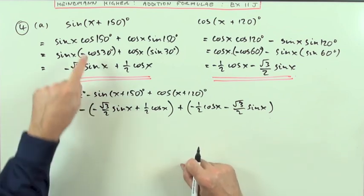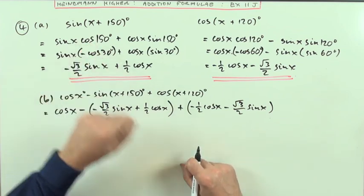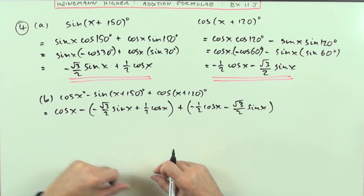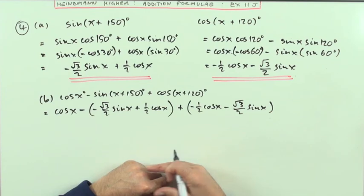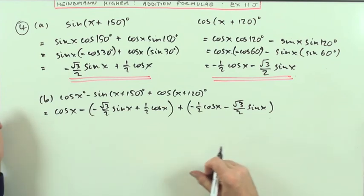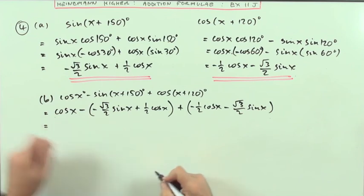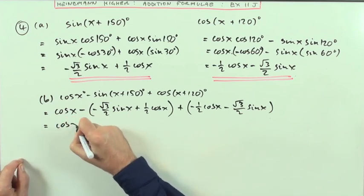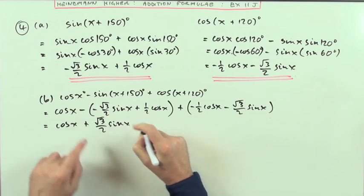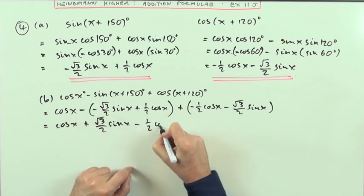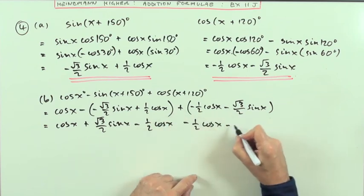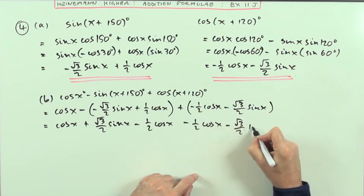It is perfectly possible to go straight from cos 120° to -1/2 just by thinking of the triangles. These were just visual aids. Then what does this come to? I've got cos x plus √3/2 sin x, but minus 1/2 cos x, minus 1/2 cos x, and then minus √3/2 sin x.